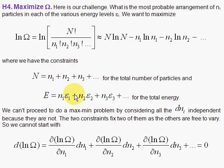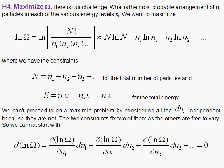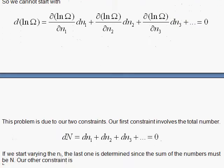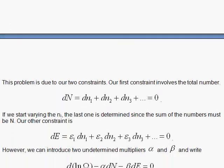It would be nice if all the variables happened to be independent, because then we could use the argument that since they're independent, the coefficients — all the partials in front — must be equal to 0. However, two are dependent because you have two equations. You can solve for two of the unknowns, the Ni's. When you solve for two, then two of these variables are not free. So undetermined multipliers will come to the rescue.